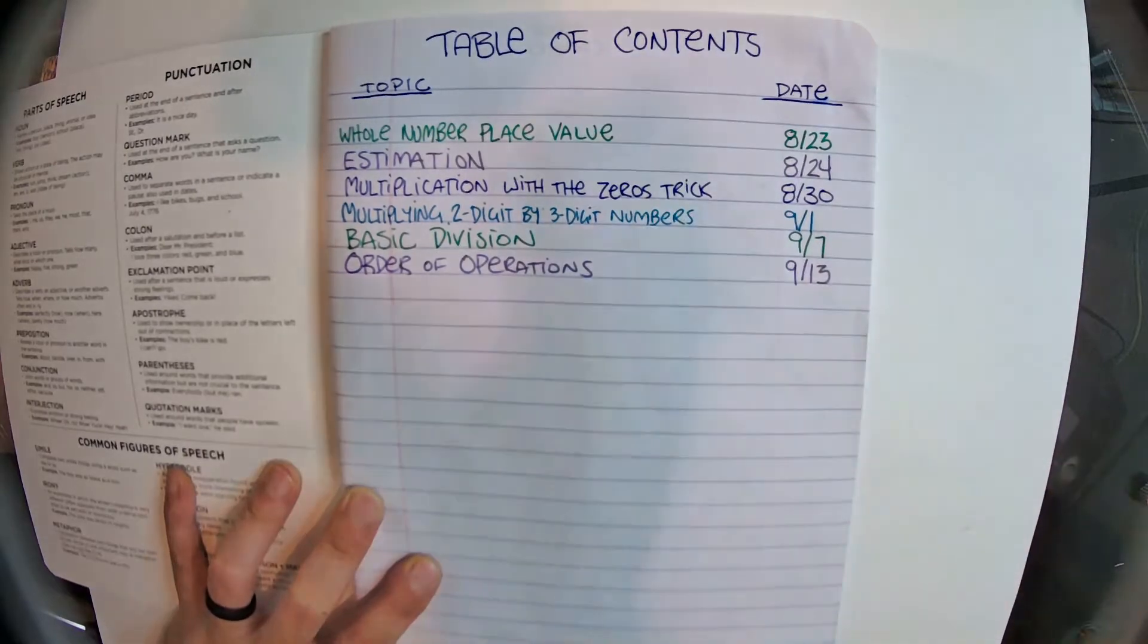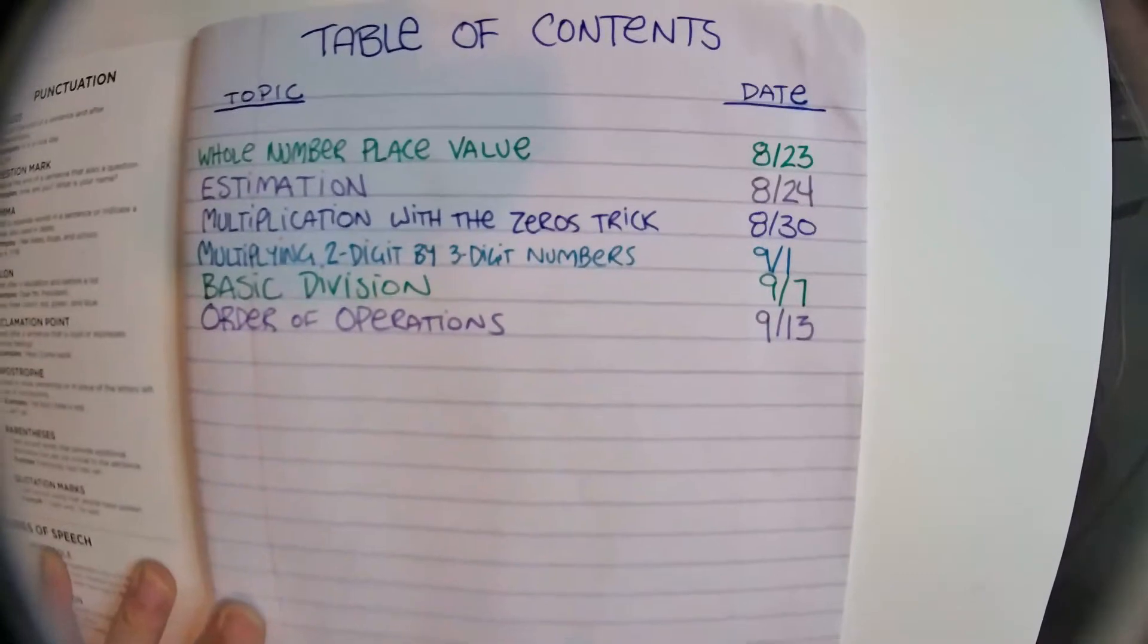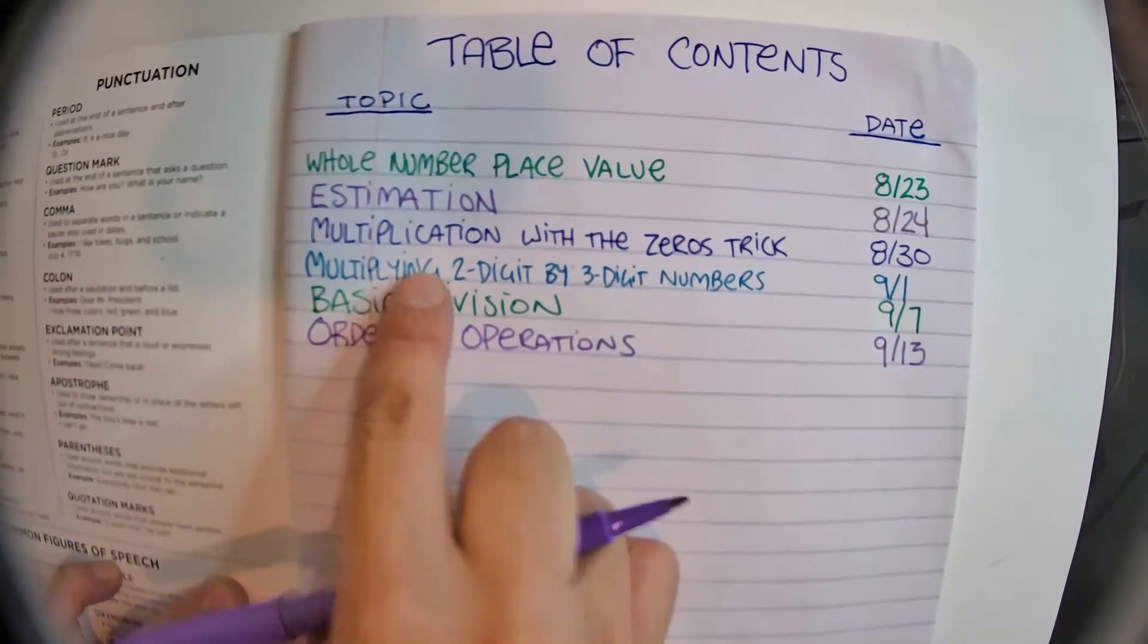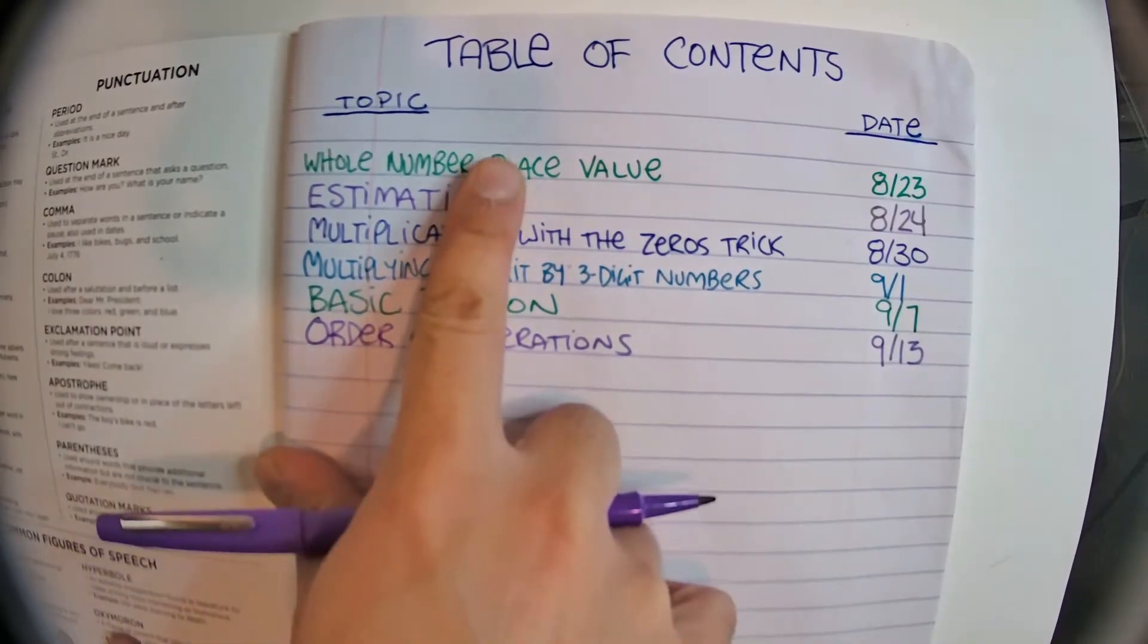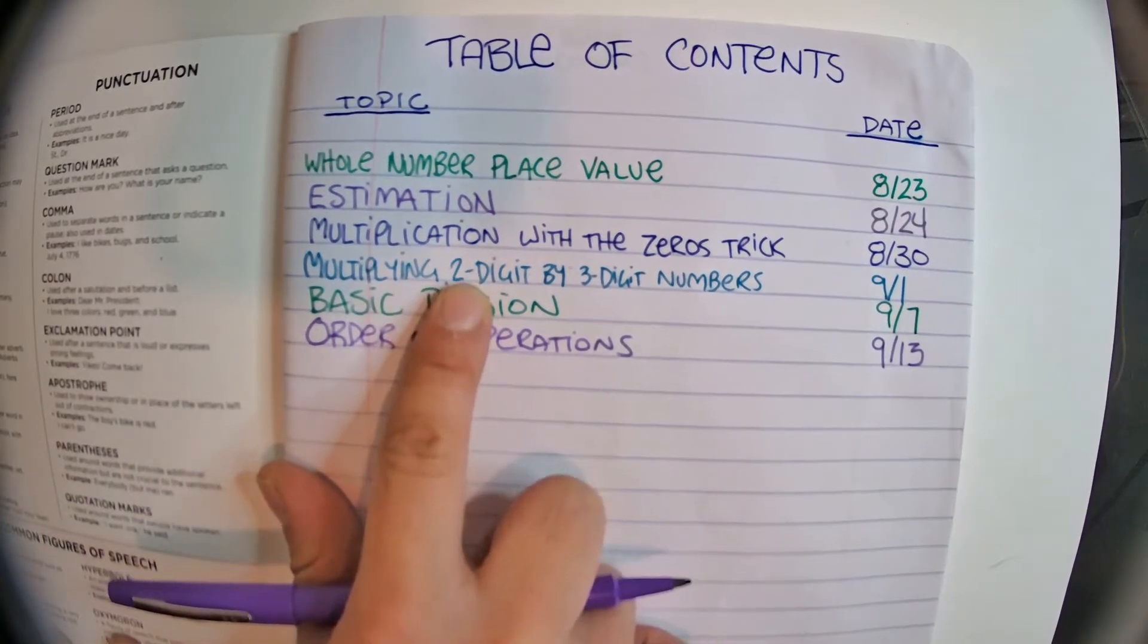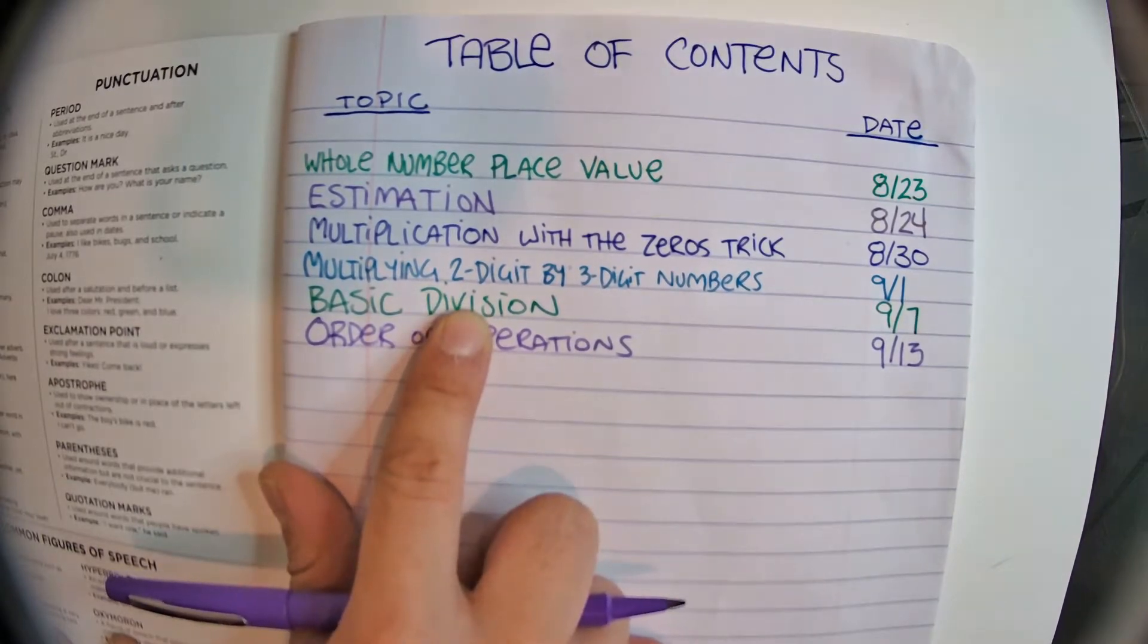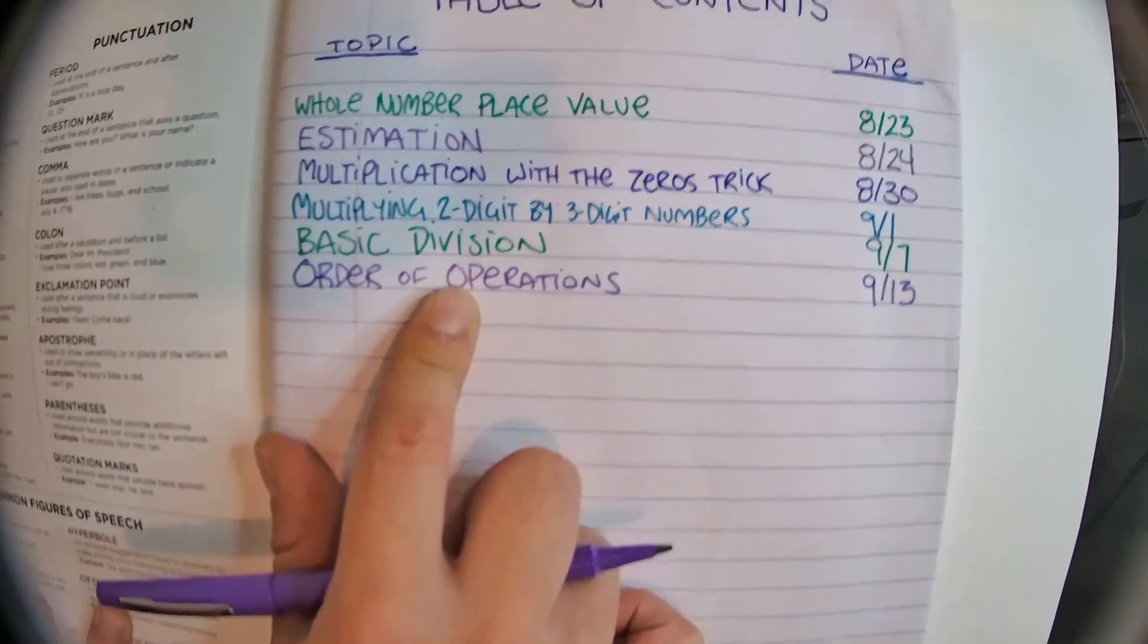The date is 9/13. So your table of contents will now have one, two, three, four, five, six entries: whole number place value, estimation, multiplication with the zeros trick, multiplying two-digit by three-digit numbers, basic division, and now order of operations.